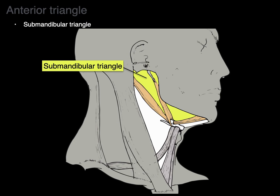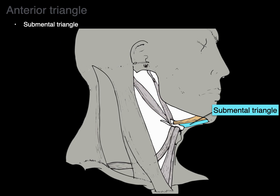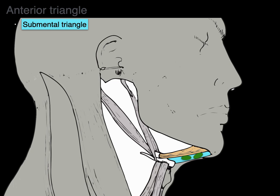Let's zoom back out and now do the submental triangle. The submental triangle is bordered by the mandible, the anterior belly of the digastric, and our hyoid bone. Zooming in, the major thing we see in there is submental lymph nodes. The chin is the mental symphysis, so below it is the submental triangle, and the lymph nodes are submental lymph nodes.